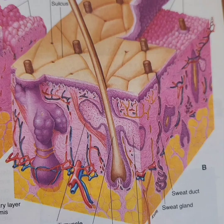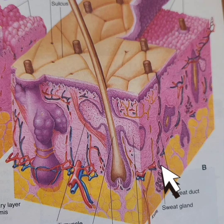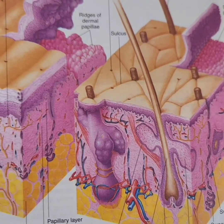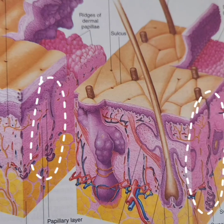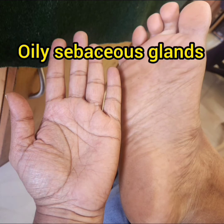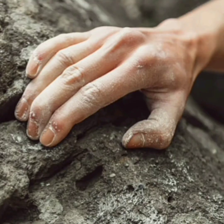The sweat gland is a merocrine type of coiled tubular gland. The secretory part is coiled and placed deep in the dermis, and the conducting part is wavy, reaching the skin surface as a separate opening. Sweat glands are seen in both thin and thick skin. We can relate this to sweating palms and soles, but there is no oily sebum secreted here — nature has intentionally avoided it to maintain good, non-slippery grip.